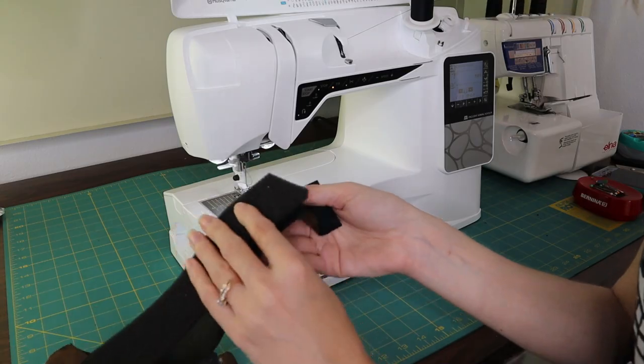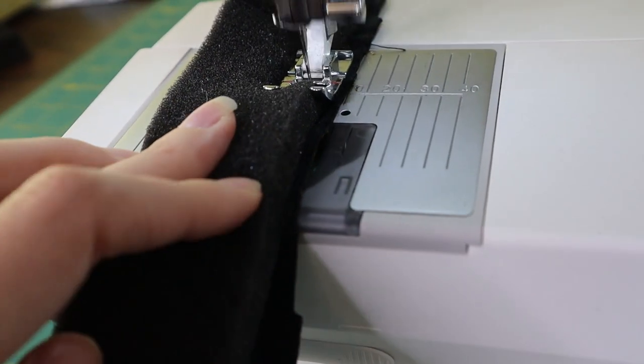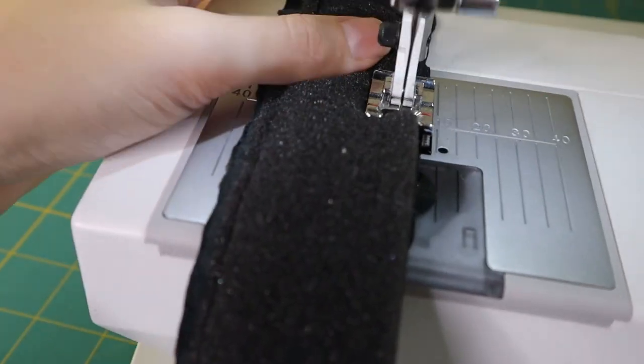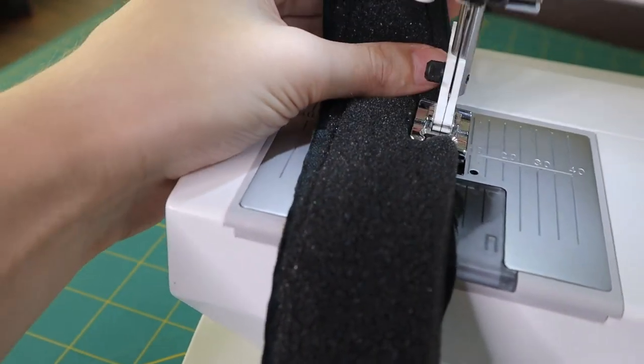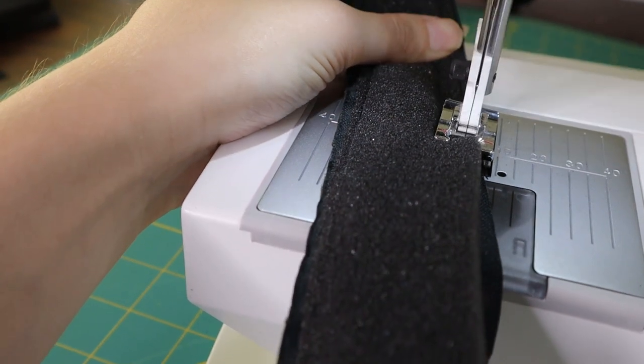I'm going to sew this faux leather to one side of the packaging foam. So I'm just doing a straight stitch and this is feeding under my sewing machine with no problems, and I'm just going to sew this down on both sides.